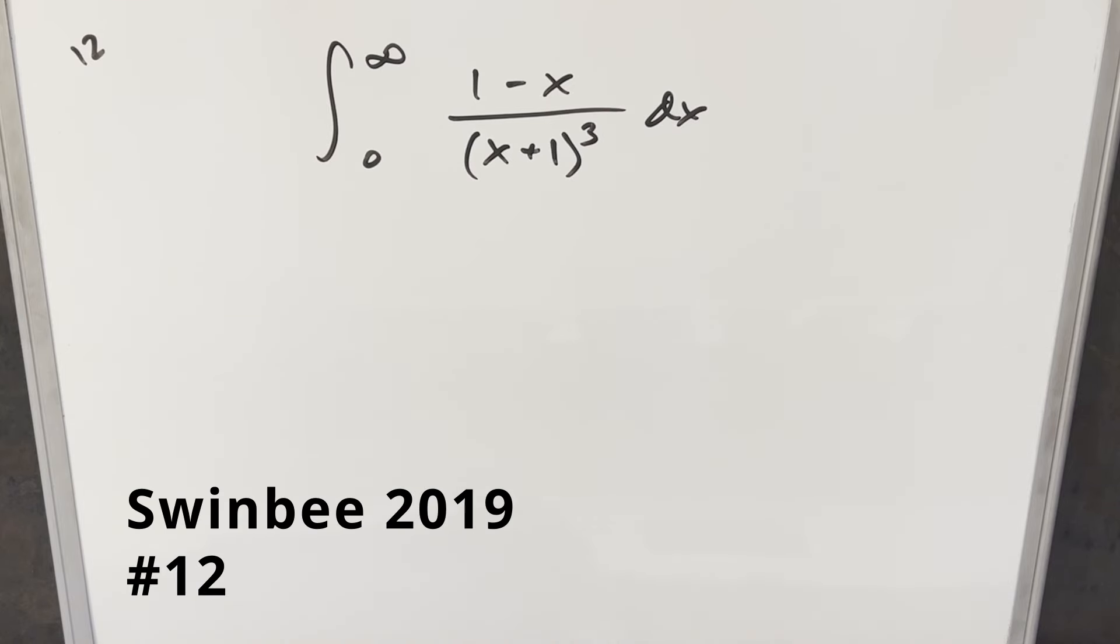Okay, we're going to do another integral. This one's from the Swinby 2019 problem 12. We have the integral from 0 to infinity of 1 minus x over x plus 1 all cubed dx.